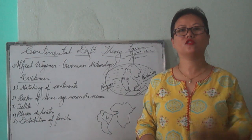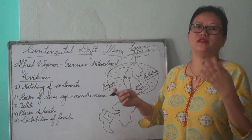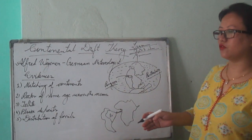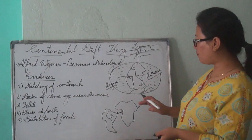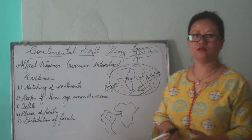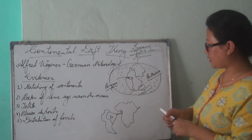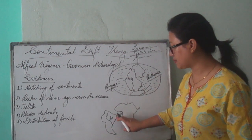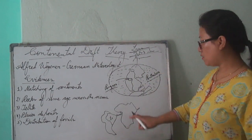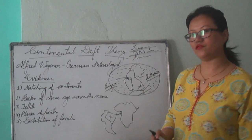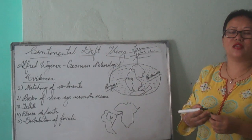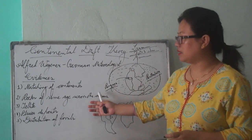The second evidence is rocks of same age across the ocean. Using a process known as the radiometric method, we can find out the ages of different rocks, animals, plants, and everything. Through this process, Wegener found evidence that rocks in different parts of continents were of the same age — especially the rocks found in the Brazilian area were identical in age and characteristics to the rocks found at the western ports of Africa. This was his second proof.